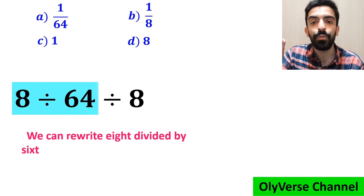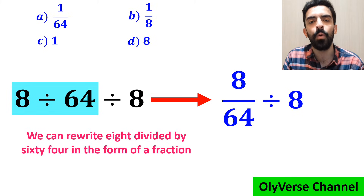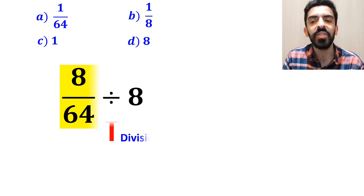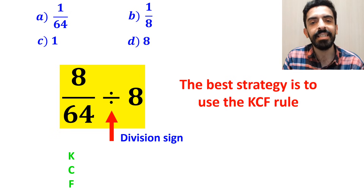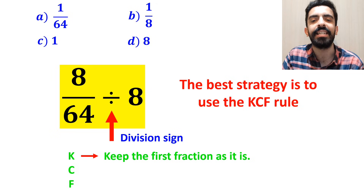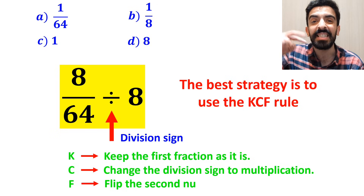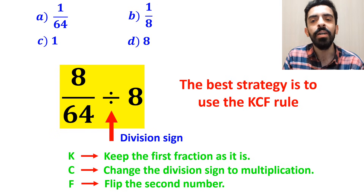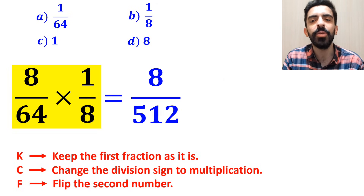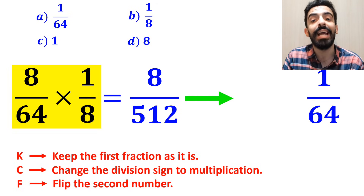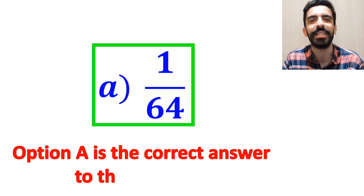Now we can rewrite 8 divided by 64 in the form of a fraction, so this expression becomes 8 over 64 divided by 8. Whenever we see a division sign between two terms, the best strategy is to use the KCF rule. K stands for keep the first fraction as it is, C stands for change the division sign to multiplication, and F stands for flip the second number. So instead of the highlighted part, we write it as 8 over 64 multiplied by 1 over 8, which gives us 8 over 512, simplifying to 1 over 64. Therefore, option A is the correct answer to this question.